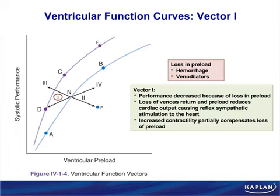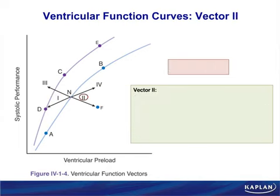Think in clinical vignettes — for example, a patient who had diarrhea for four days: decreased preload due to loss of vascular volume. Now, vector number 2: going from N to F. Preload went up but performance went down — they didn't go in the same direction. So this is not Frank-Starling. What happened here is a reduction in contractility.